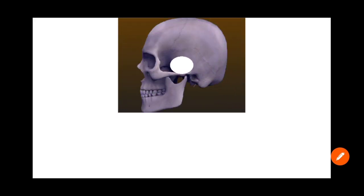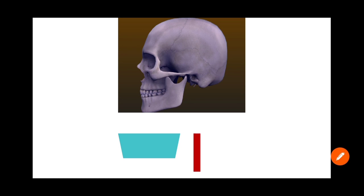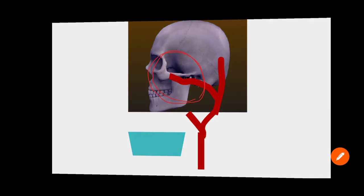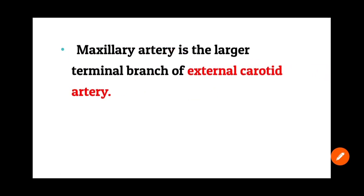To describe the origin, we start from where the external carotid artery emerges. Imagine this is your skull and this is the thyroid cartilage. The common carotid artery divides at the top edge of the thyroid cartilage into internal and external carotid arteries. The maxillary artery is the larger terminal branch of the external carotid artery.